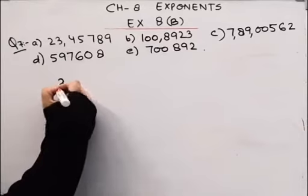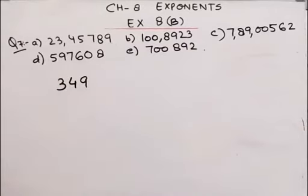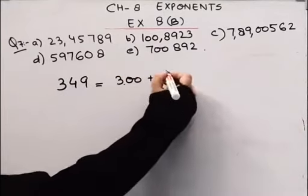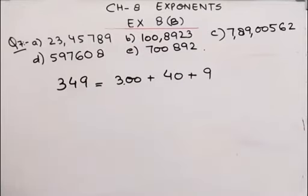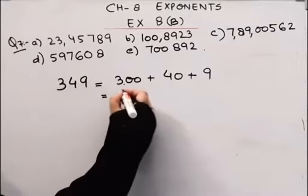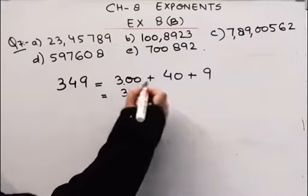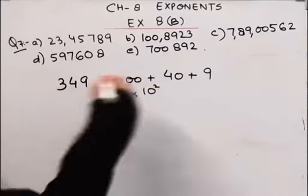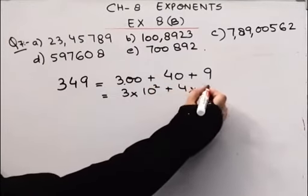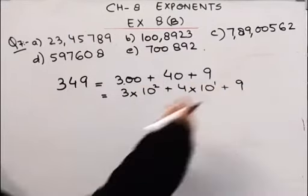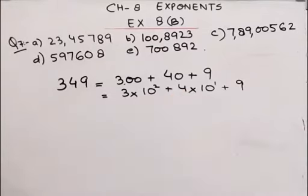Suppose if we have a number like 349, how can we write this number in expanded form? We can write 349 directly. But how do we write numbers with zeros? 4 into 10 raised to the power of 1, because we write this number — 3 plus 9. This is called powers of 10 in the exponent form.